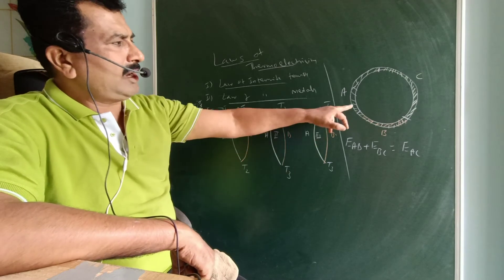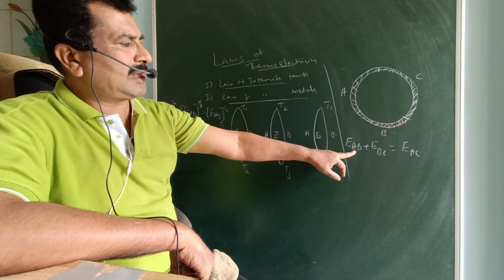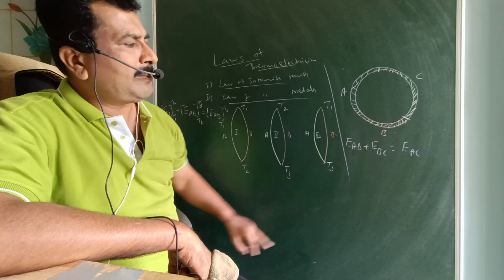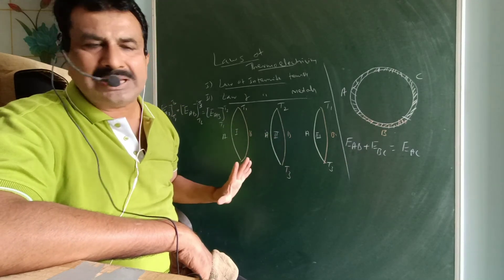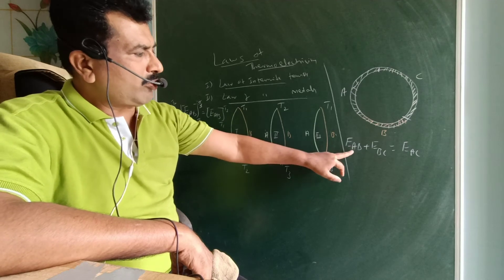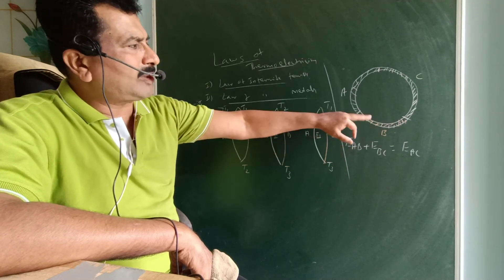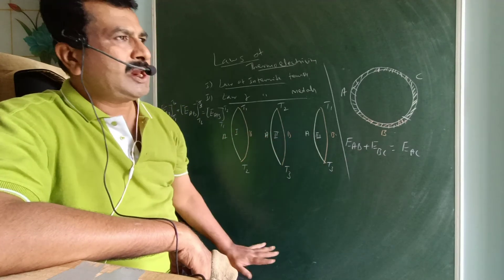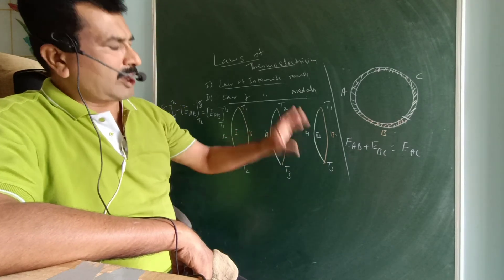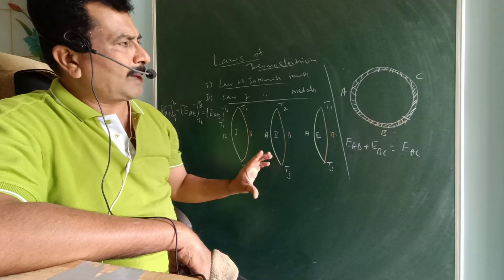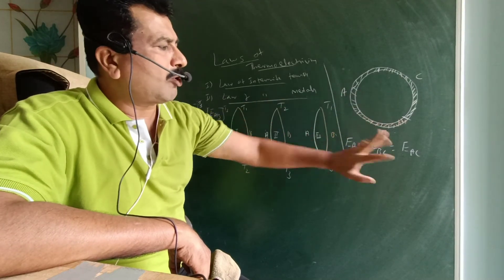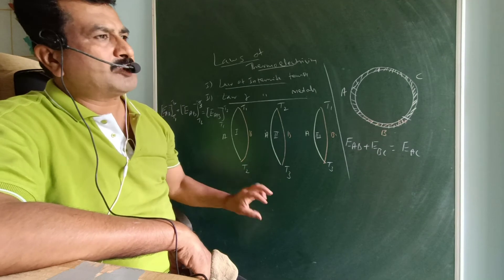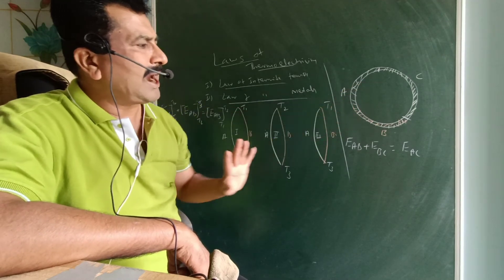The law of intermediate metals states the equation: E_AB plus E_BC equals E_AC. This means the thermo EMF produced by the pair of metals A and B in the thermocouple, plus the thermo EMF produced by the pair of metals B and C in the thermocouple, equals the thermo EMF produced by the thermocouple of metals A and C.